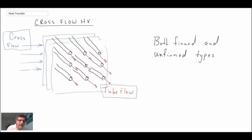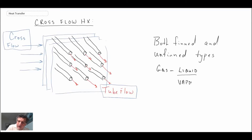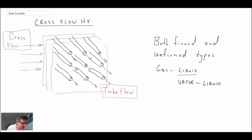Typically — though not exclusively — cross flow heat exchangers involve gas-to-liquid heat exchange. The 'liquid' side may actually be a vapor, as in condensation, or the fluid could be going through a phase change from liquid to vapor depending on the design. There are different flow arrangements depending on whether the flow is mixed or unmixed and whether you have fins or no fins.